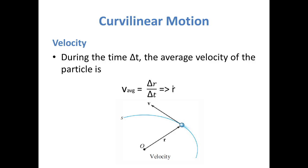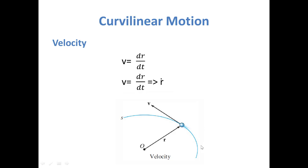Similarly, for velocity: during the time interval delta-t, the average velocity of the particle is delta-r divided by delta-t. The velocity v equals delta-r divided by delta-t, which is dr/dt, and that is further equal to r-dot.